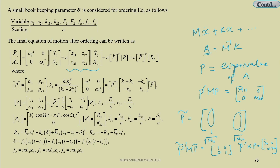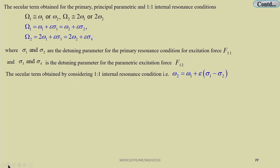The basic assumption is that [X₁; X₂] = P̃·[X₁ᶜ; X₂ᶜ] (modal coordinates), which is why the equation reduces to the decoupled form. After getting this equation — with time delay also considered — the equation is reduced to this form, and from it one can see that there are different resonance conditions.